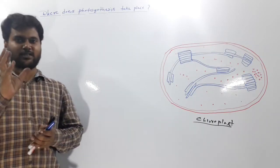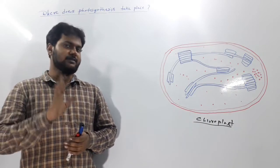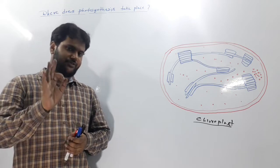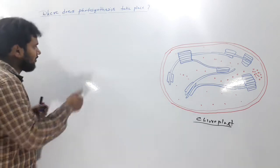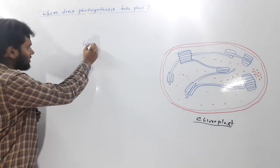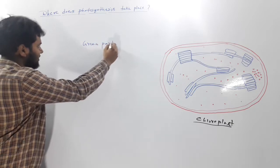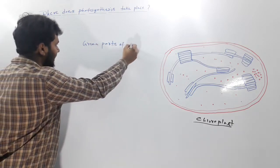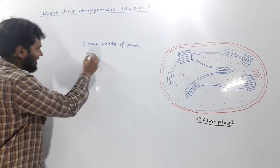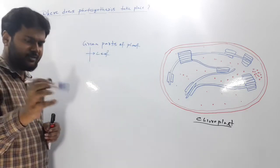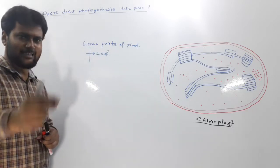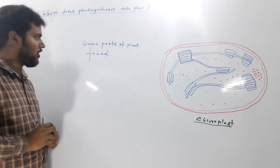Let us now discuss the site where photosynthesis takes place. This is the green part of a plant. So it is green parts of plant, and generally it is leaf. In some plants there is green stem or other green parts where photosynthesis will also occur.